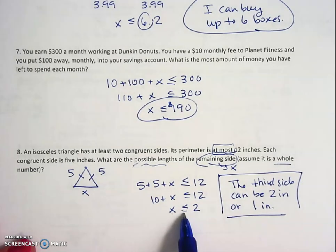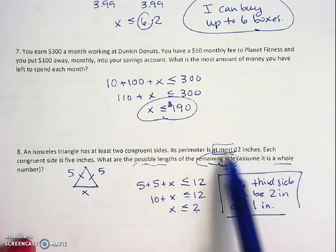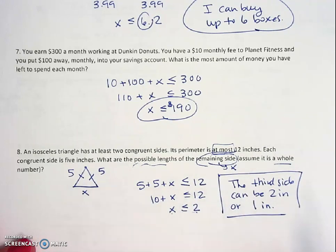Because it just has to be less than or equal to 2, so it can be equal to 2, or it could also be 1 because it said it would be a whole number. And even if it was 1, it would still be a true statement that the perimeter was less than 12.